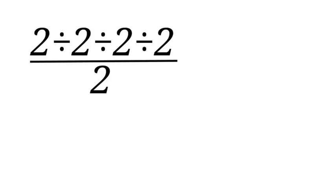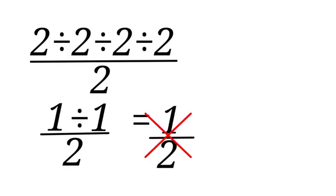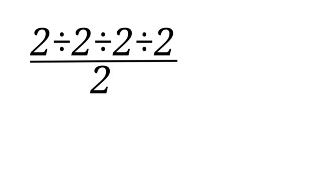Hello, welcome to my channel. Let us solve two divided by two divided by two divided by two, all over two. Two divided by two is one, two divided by two is one — we now have one divided by one, all over two, giving one over two. But this is wrong! Why? Because we did not follow the order of operations.